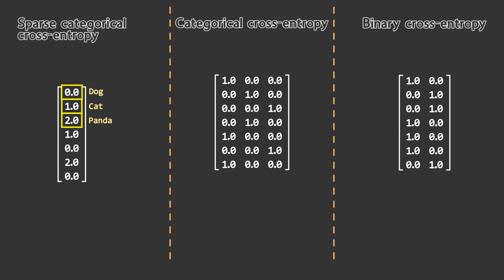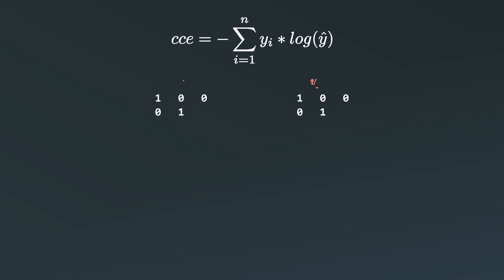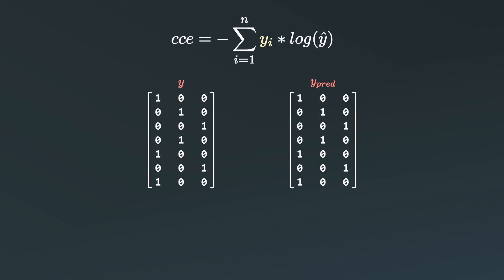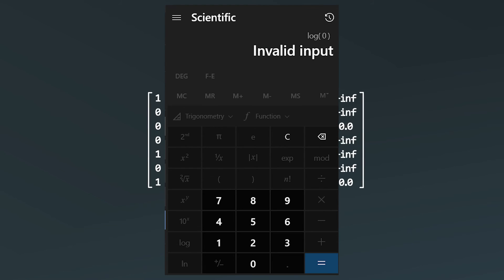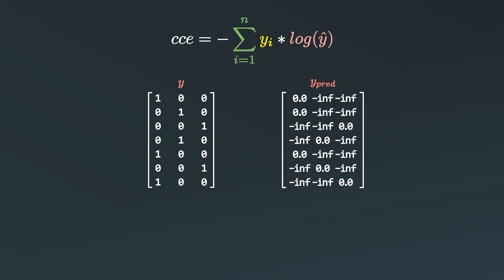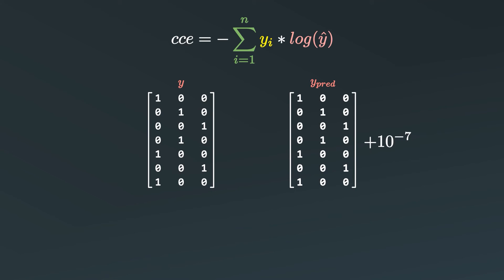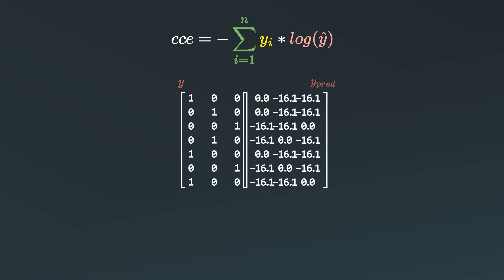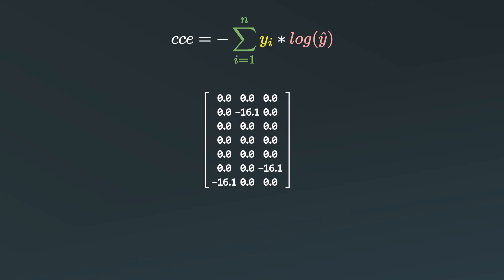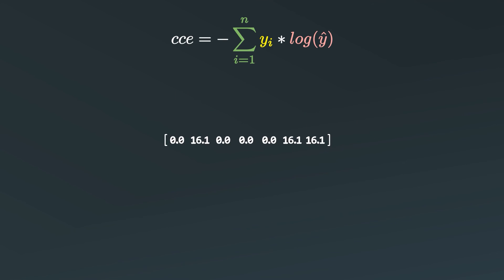In this video we will cover categorical cross-entropy in depth. It effectively tells the difference between the actual output y and y-hat in a classification task. The formula is: take y and multiply it with the log of y-hat, then sum the result and negate the entire thing. When we compute the log of y-hat we get infinity values because the log of 0 is undefined. To overcome this, we add a very small epsilon (10^-7) to y-hat. We then calculate log of y-hat to get a transformed matrix, multiply it with the actual output y, sum it, and negate.